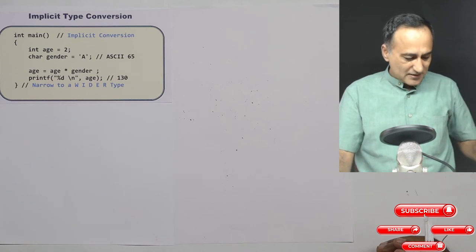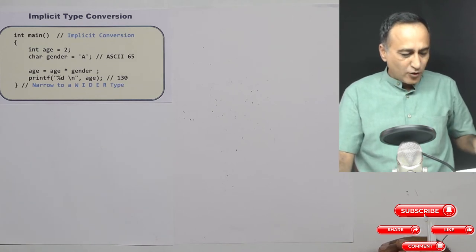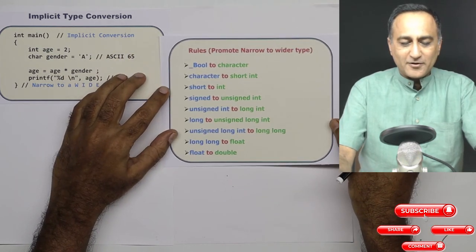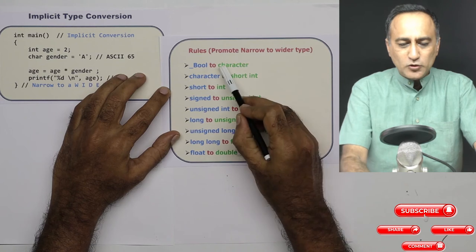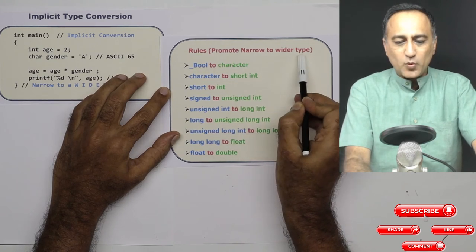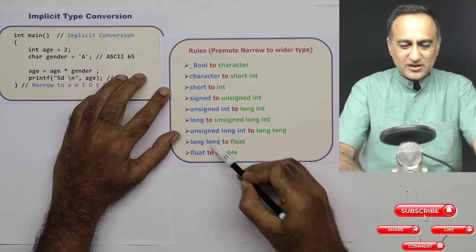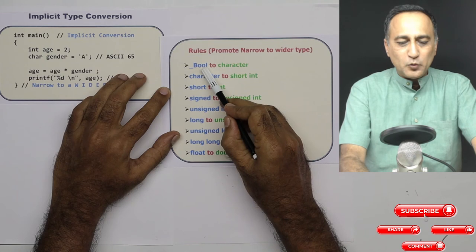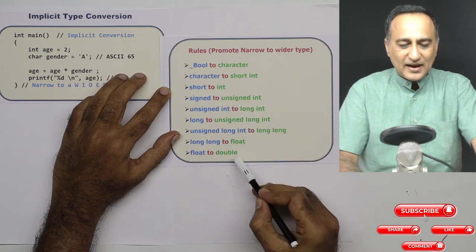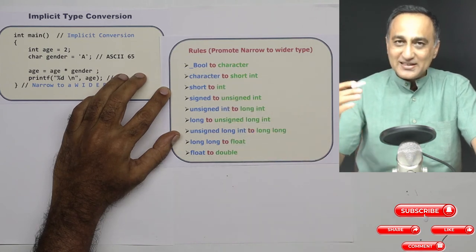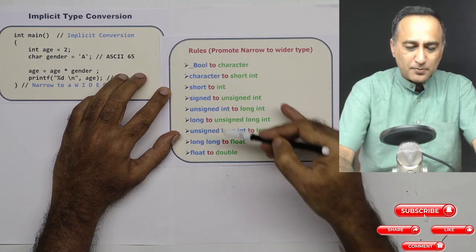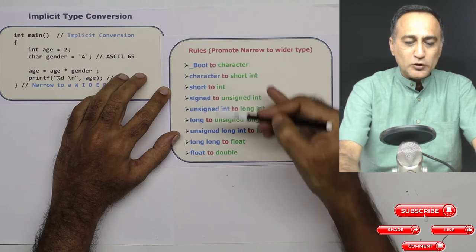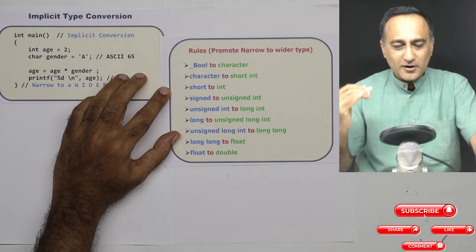So let's take a look at some of the rules involved in the promotion of this particular data type. If you look at the different rules to promote the narrower data type to the wider data type, this is actually the hierarchy. You can think of it this way: bool has the lowest capacity and double or long double has the highest capacity. So if I want to multiply bool with long double, then it makes sense to promote bool to double because then there is no loss of information.